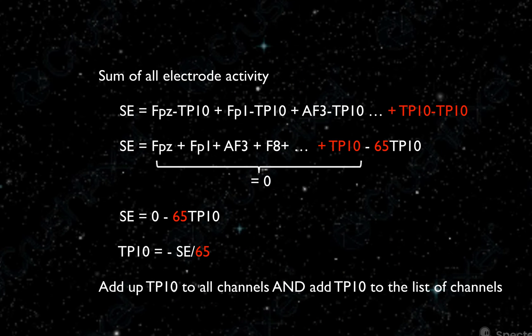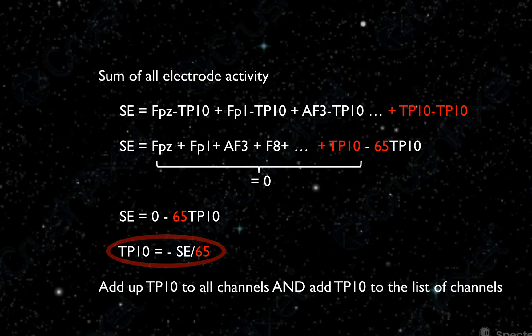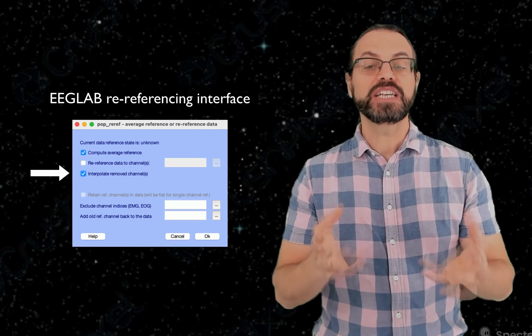Two minor points here. First, the potential of TP10 with a common TP10 reference is zero at all times. However, we can include it in the average reference — in this case, TP10 is minus the sum of all channels divided by 65 instead of 64. Typically, we would include a scalp channel in the reference, but not a non-scalp channel like linked ears or nose. Second minor point: what if you remove bad channels? Then the average reference is biased. In this case, in EEG Lab, we allow people to temporarily interpolate bad channels for computing the reference.